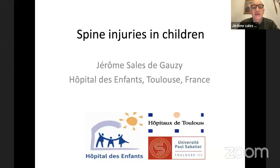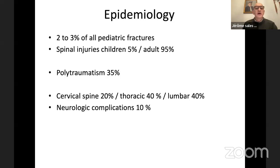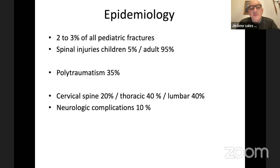Good morning everybody. The topic for today is about spine injuries in children. Concerning epidemiology, this represents 2% to 3% of all pediatric fractures. When we compare to adult injury, it's very few, because for spinal injury, it represents only 5% in children and 95% in adults.